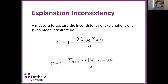To do so we first need to come up with some definition of explanation inconsistency — that is, how much do model explanations change? This first equation is the general form of our measure, and it's essentially a normalized version of the separability between models. For any given model architecture we train multiple versions of that model with different hyperparameters, and then for every pair of those models A and B we calculate the separability of the explanation values.